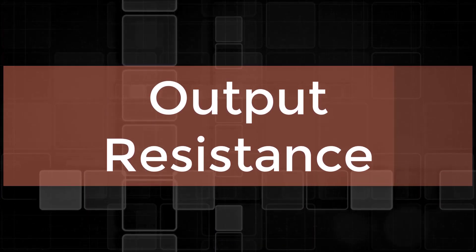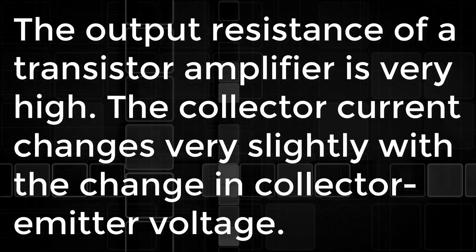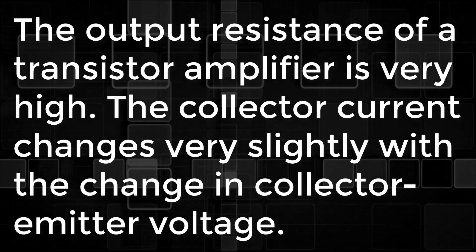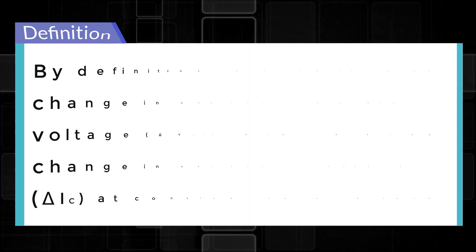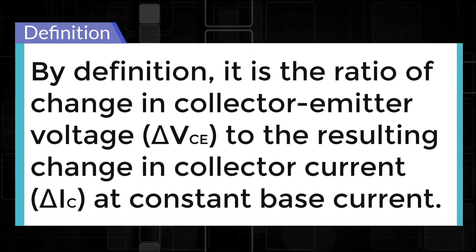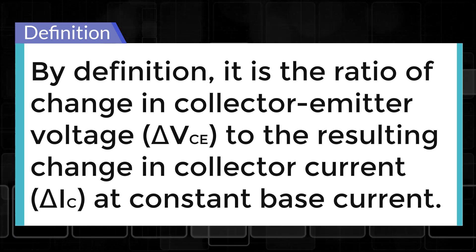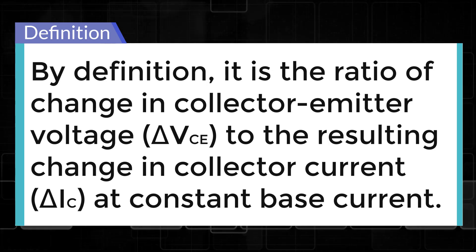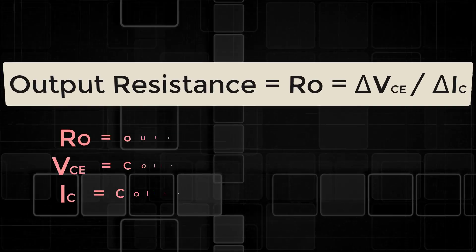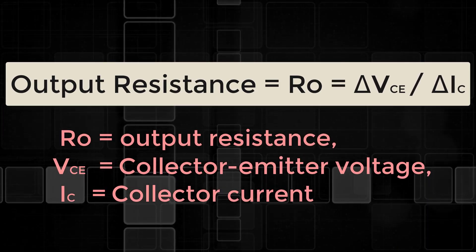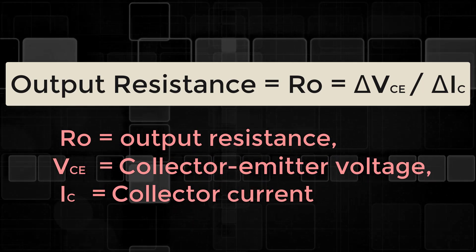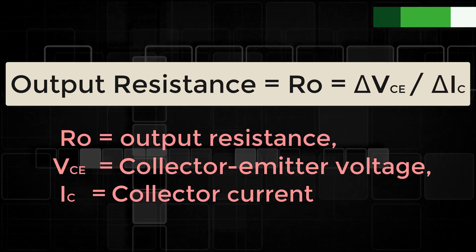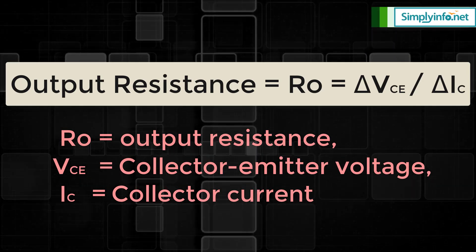Output resistance: The output resistance of a transistor amplifier is very high. The collector current changes very slightly with a change in collector-emitter voltage. By definition, it is the ratio of change in collector-emitter voltage ΔVCE to the resulting change in collector current ΔIC at constant base current. Output resistance RO = ΔVCE / ΔIC, where RO is output resistance, VCE is collector-emitter voltage, and IC is collector current.